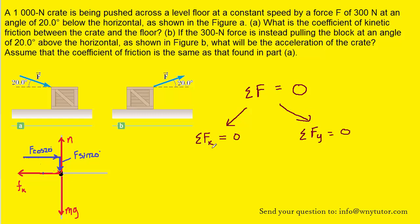We can begin with the sum of the forces in the x direction. Notice there are a couple of forces: F cosine 20, which is pointing to the right and is therefore positive, and then Fk, the kinetic frictional force, which is pointing to the left and is therefore negative. We can fill those in.